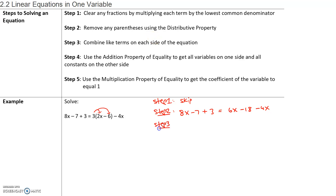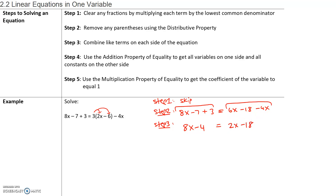Step three: combine like terms on each side of the equation. The equal sign splits up the left side from the right side. On the left side we have negative 7 plus 3 — those are like terms, so we combine them. Negative 7 plus 3 is negative 4, giving us 8x minus 4 on the left. On the right side, 6x minus 4x gives us 2x minus 18.